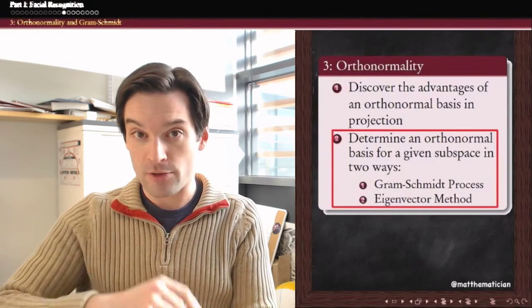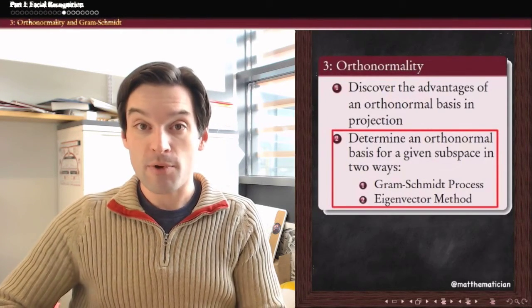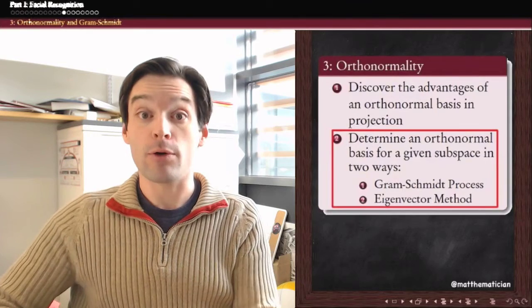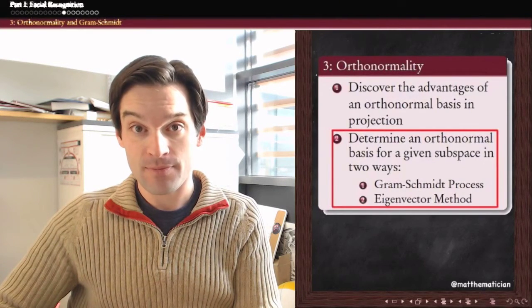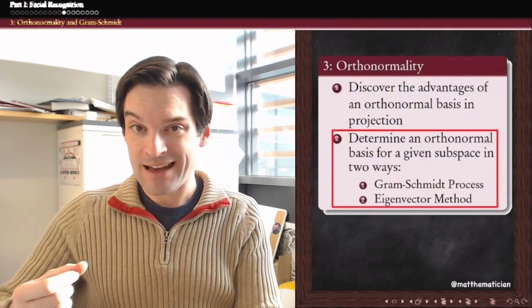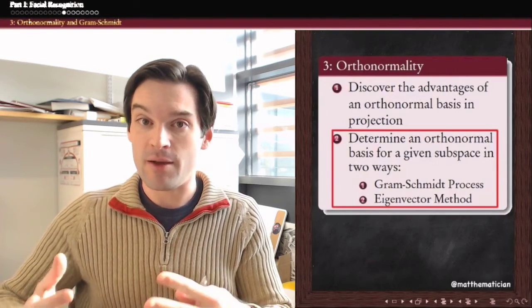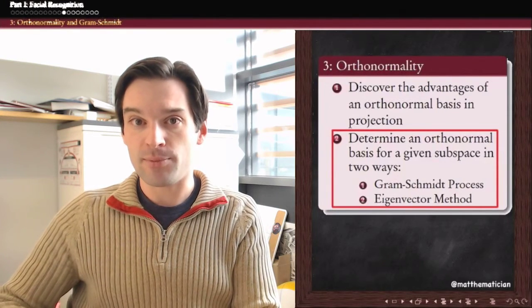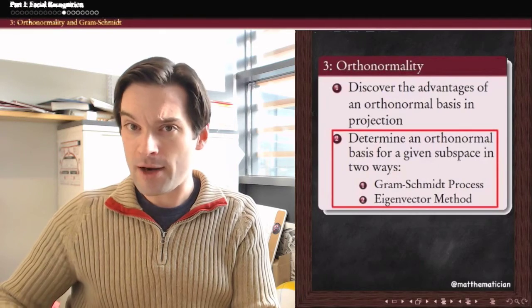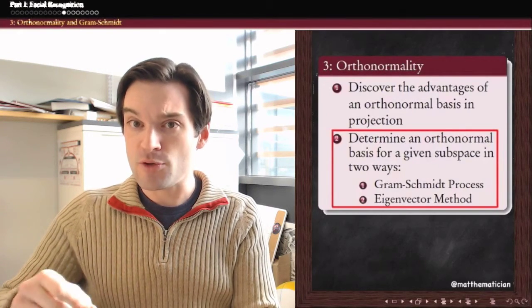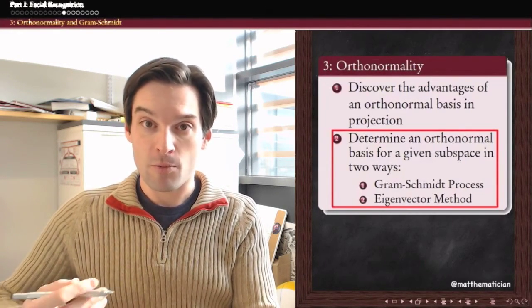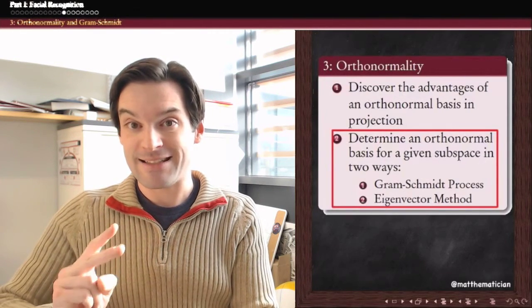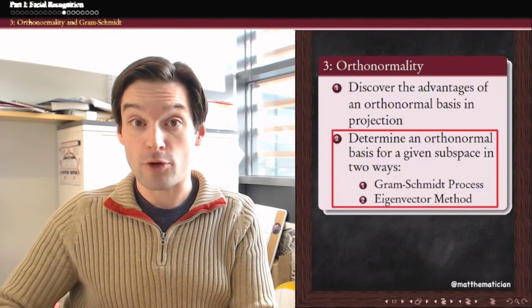We're going to take a look at two different algorithms, two different processes, by which we can take any basis for a subspace and cook it down into an orthonormal basis for that subspace. The first is called the Gram-Schmidt procedure, a geometric iterative process that relies heavily on the geometry present in R^n. The second is a more sophisticated approach called the eigenvector method, which is used more in practice and specifically in facial recognition algorithms. Let's look at both.